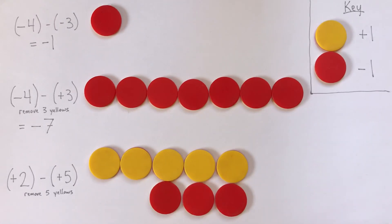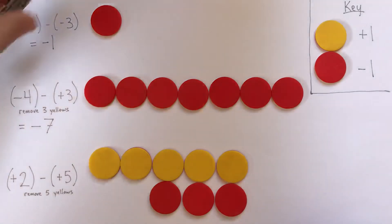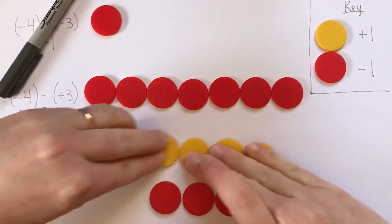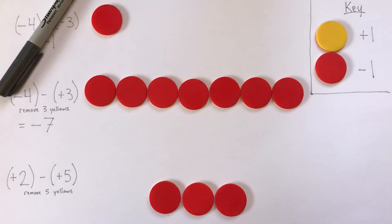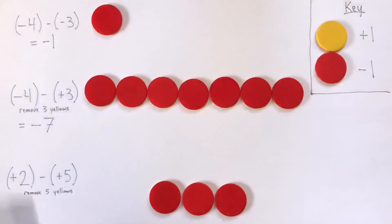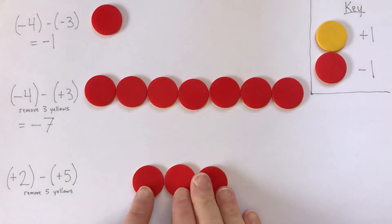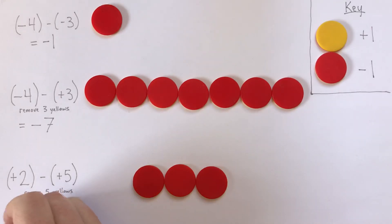I can remove all these yellows. And this is my answer here. So positive 2 subtract positive 5 is equal to negative 3. Alright, thanks a lot.